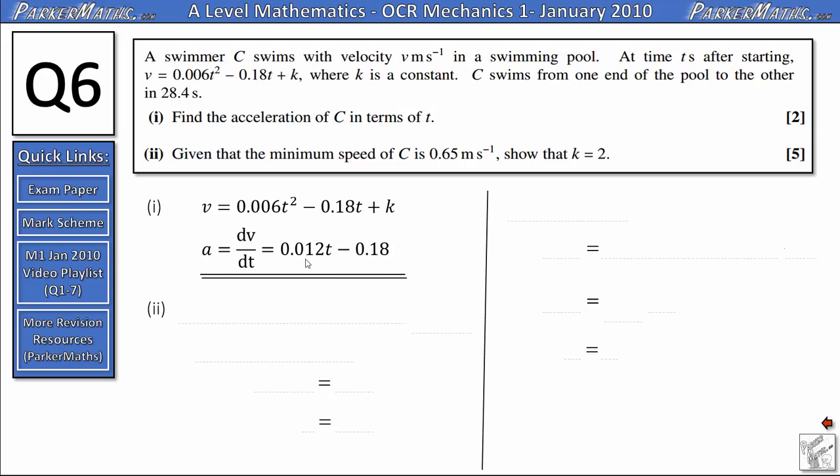Part two says, given that the minimum speed of C is 0.65 meters per second, show that k equals 2.